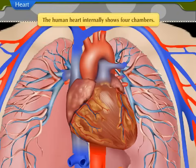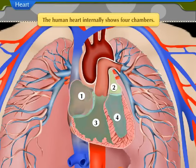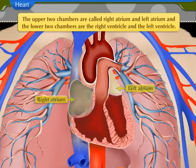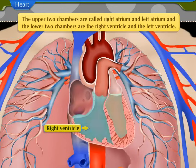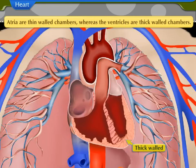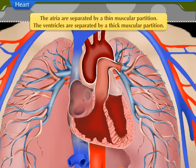If we observe the cross-section of the human heart, internally it shows four chambers. The upper two chambers are called right atrium and left atrium, and the lower two chambers are called the right ventricle and the left ventricle. Atria are thin-walled chambers whereas the ventricles are thick-walled chambers. The atria are separated by a thin muscular partition, and the ventricles are separated by a thick muscular partition.